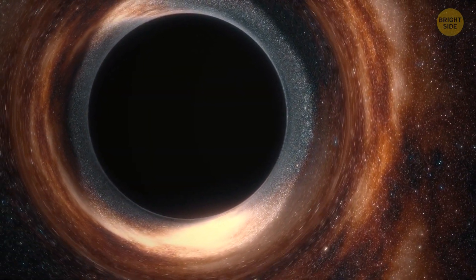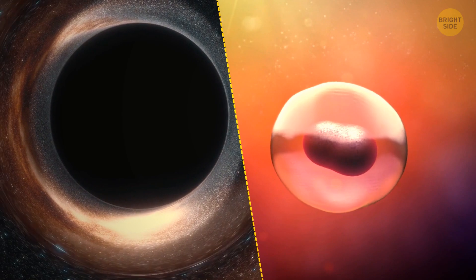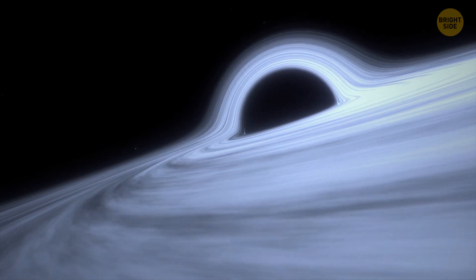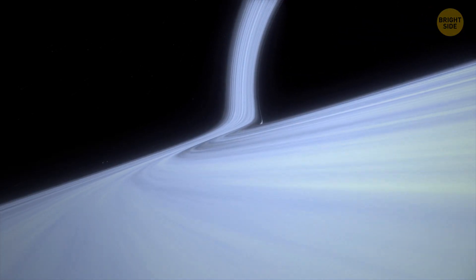Black holes don't have physical boundaries like a membrane either. The event horizon, which is closest to a typical boundary, is a threshold which, after passing, you can't get out.